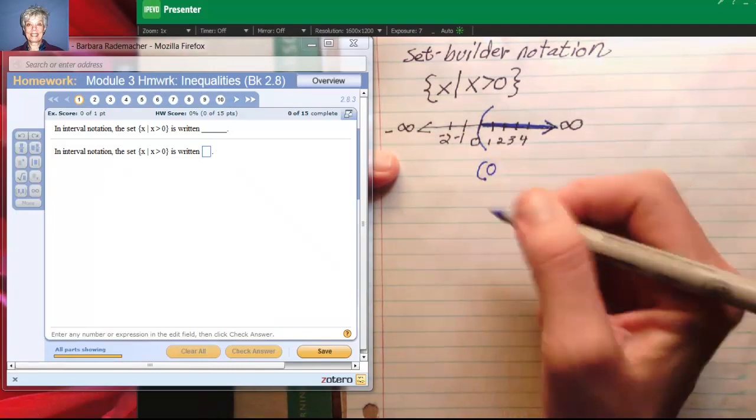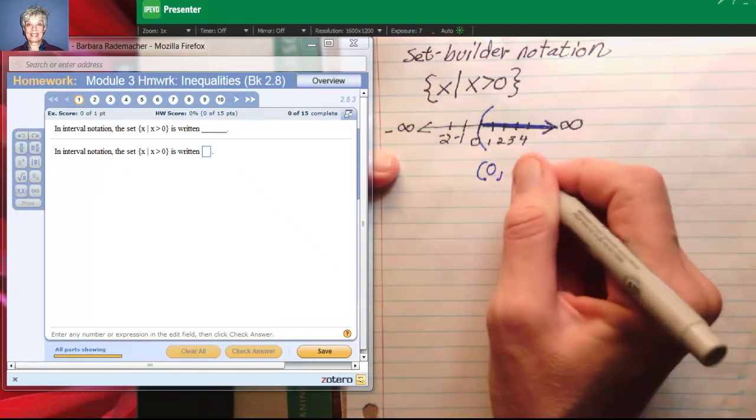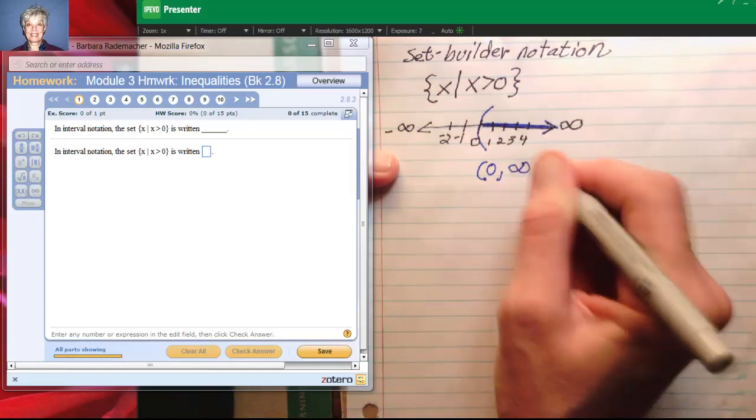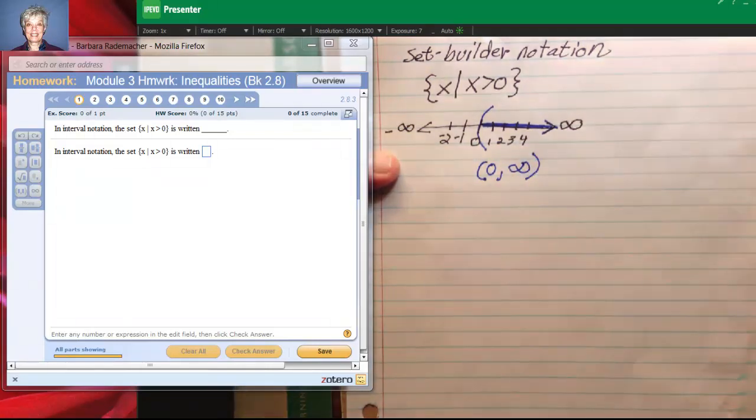And how you would say this in interval notation is parenthesis, zero, the end point, comma, infinity, parenthesis. Whenever you write infinity or negative infinity, you always write a parenthesis, you never write a bracket.